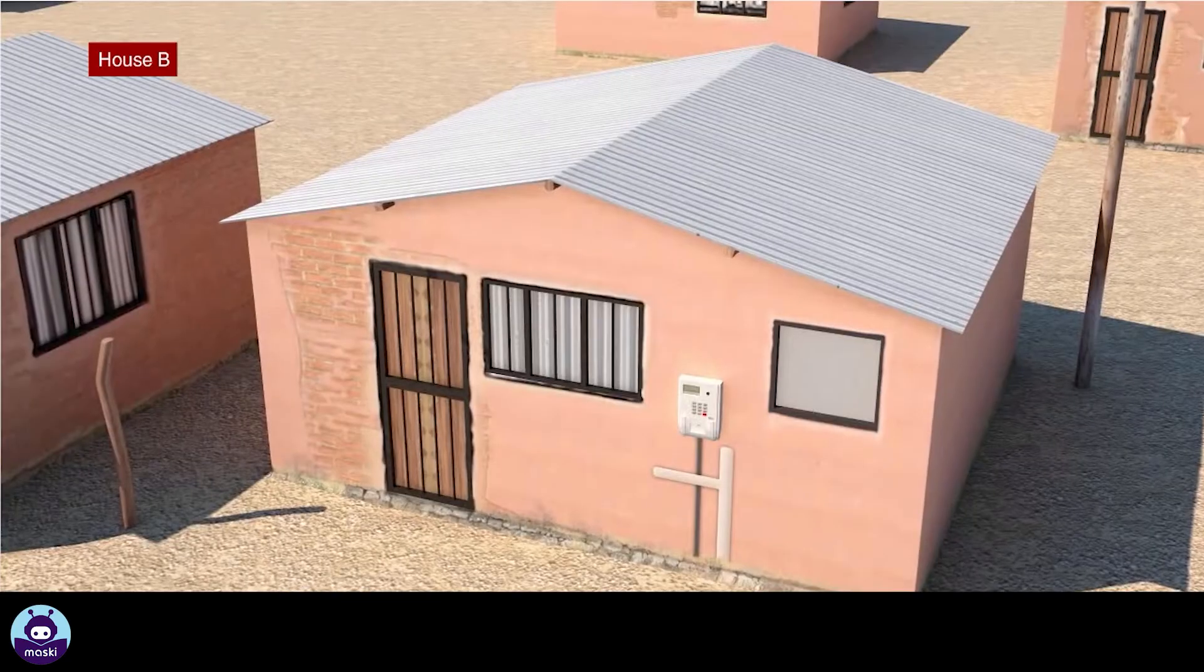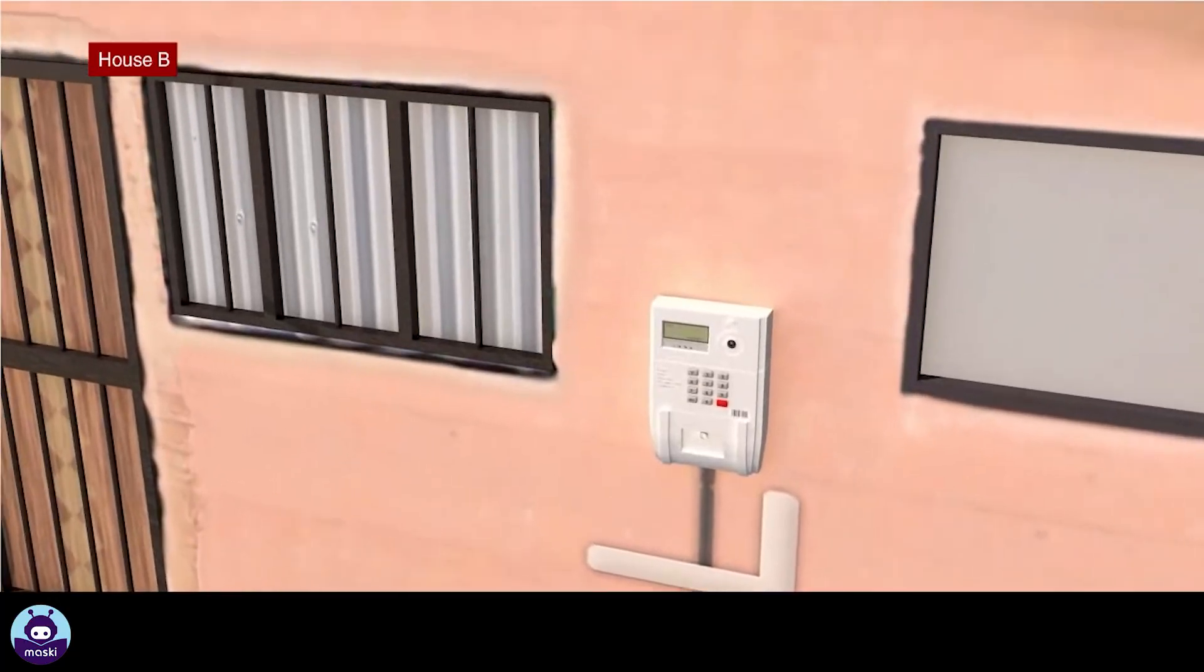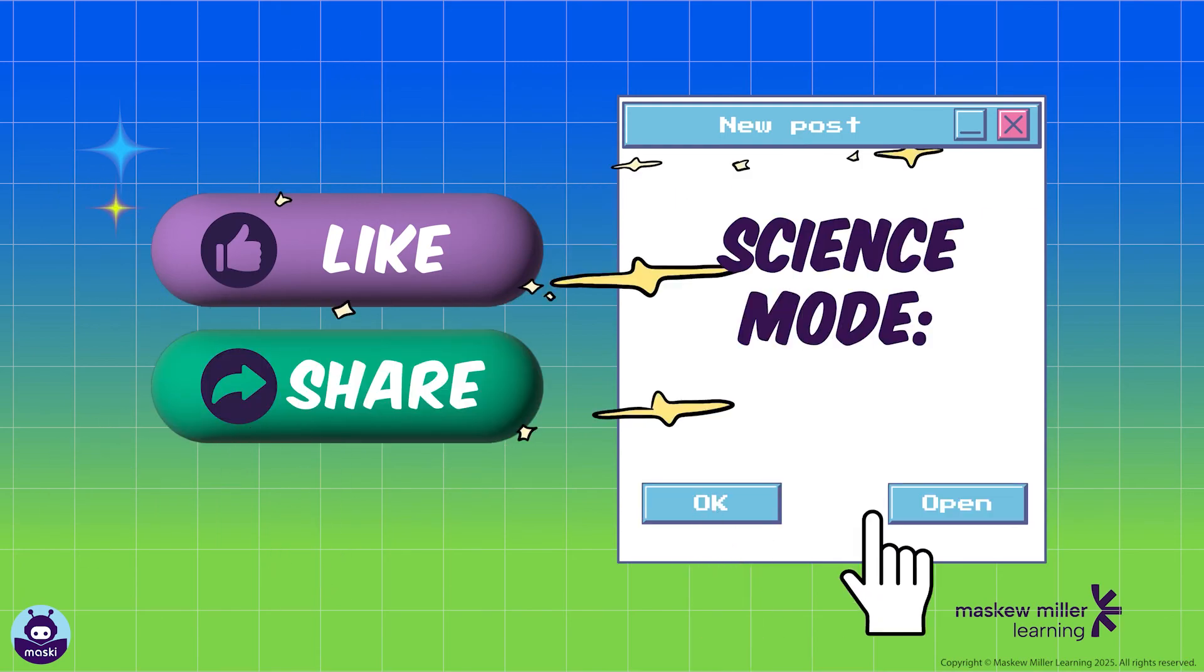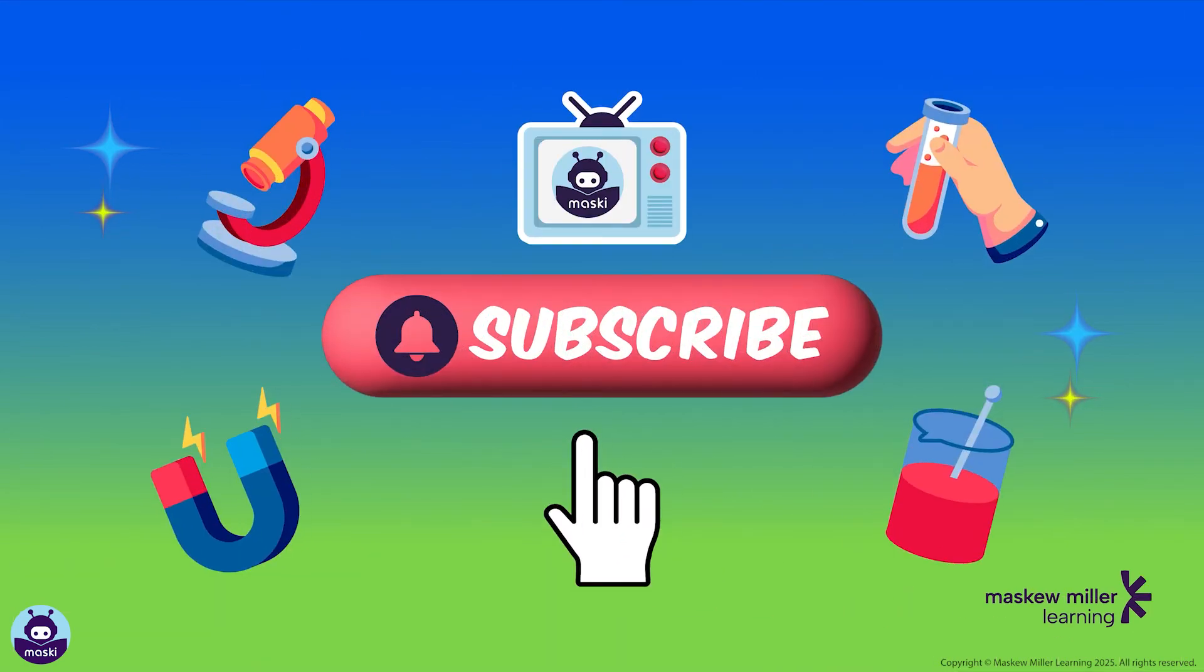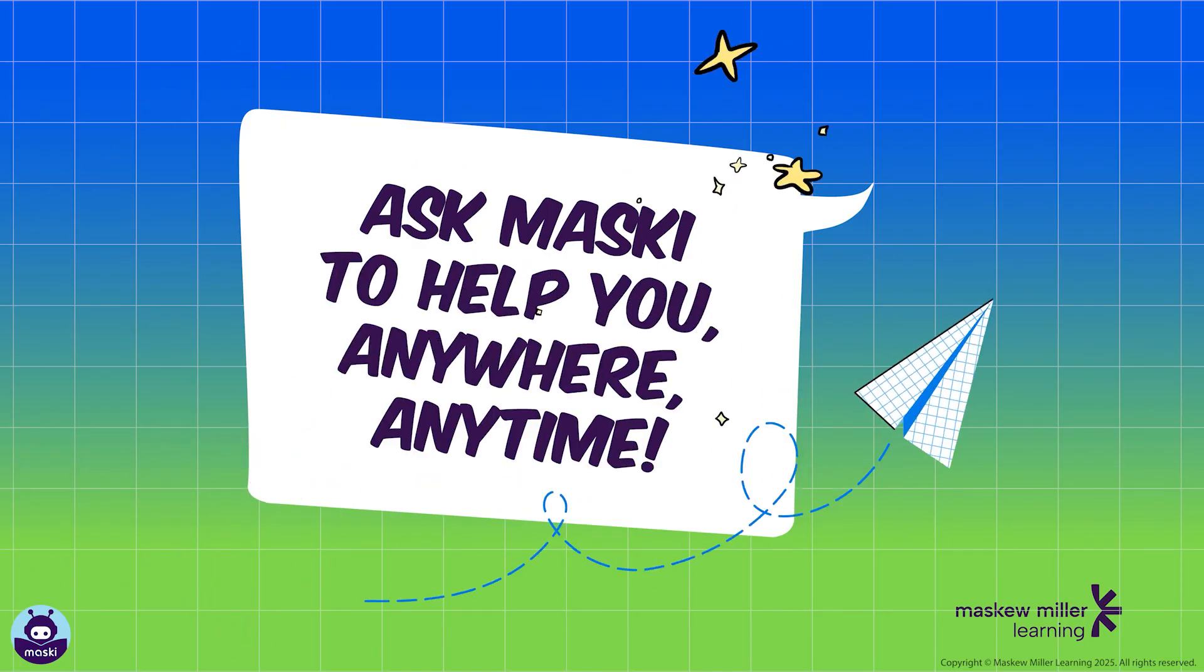House B uses a prepaid meter and buys a certain number of units of electricity before using the electricity. Need more help? Subscribe to our channel. Can't wait that long? Ask me to help you anytime, anywhere.